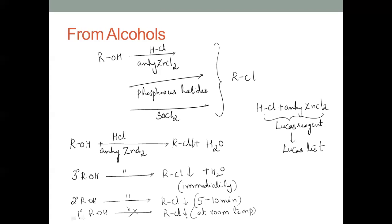For primary alcohols, no precipitate is formed — no reaction takes place at room temperature. So this is how we differentiate between tertiary, secondary, and primary alcohols: turbidity formed immediately means tertiary; formed after five to ten minutes means secondary; no reaction at room temperature means primary. This is the Lucas test for differentiation.